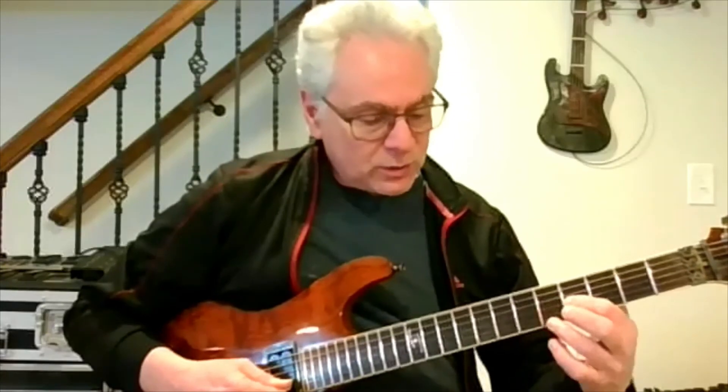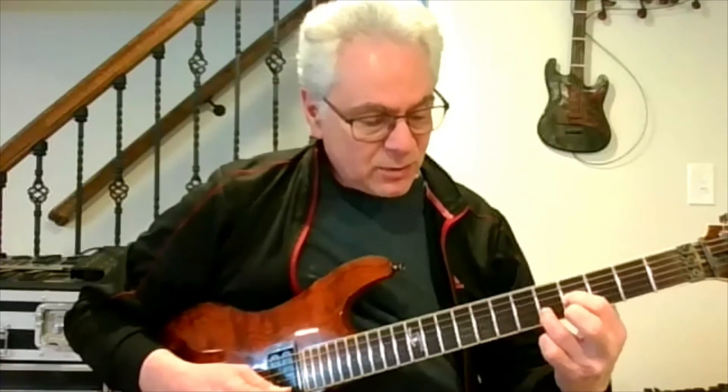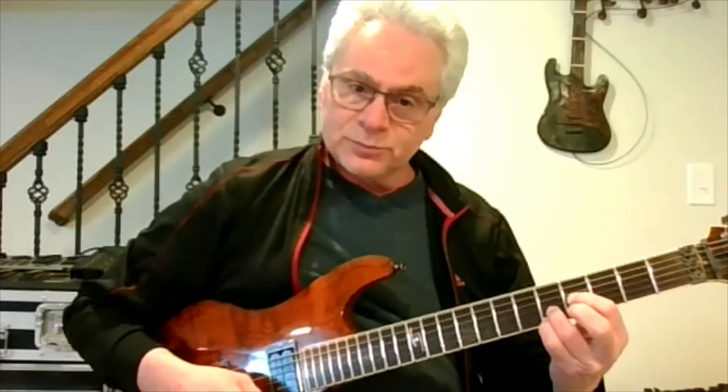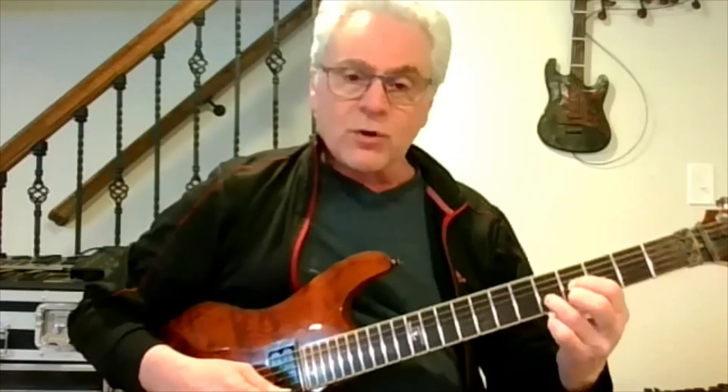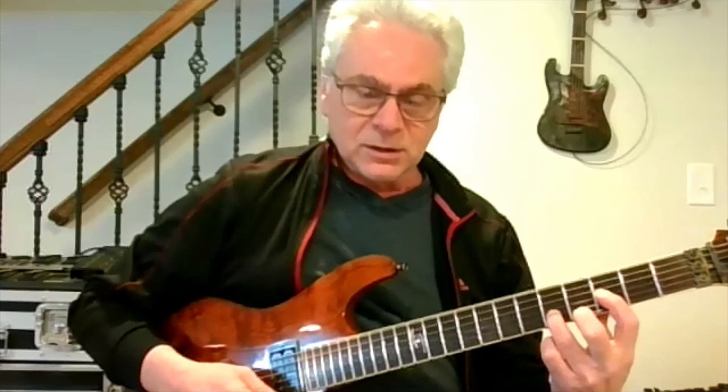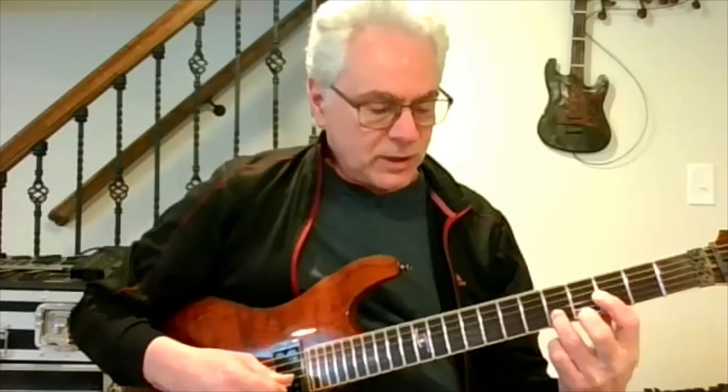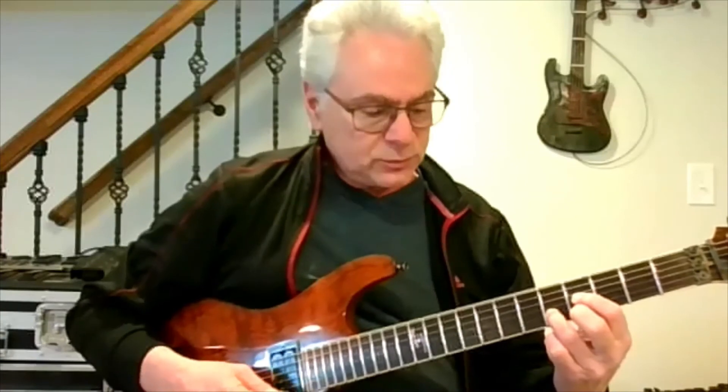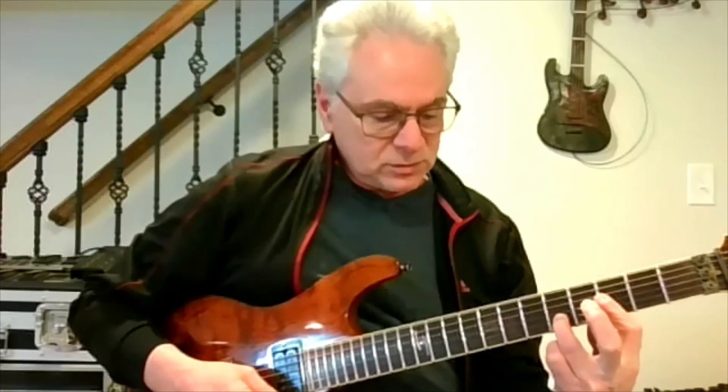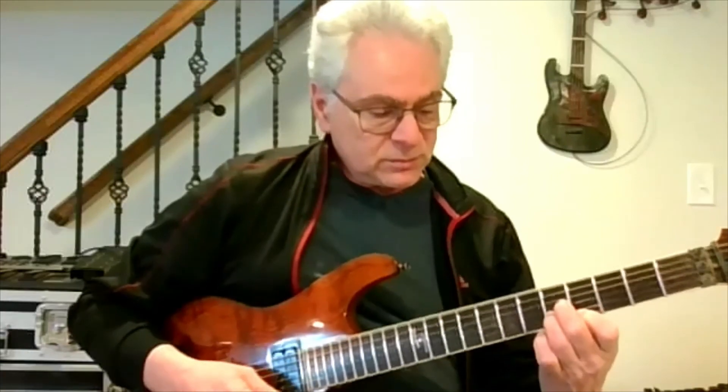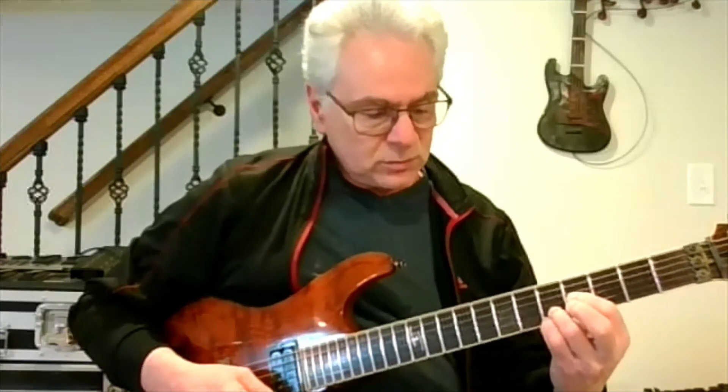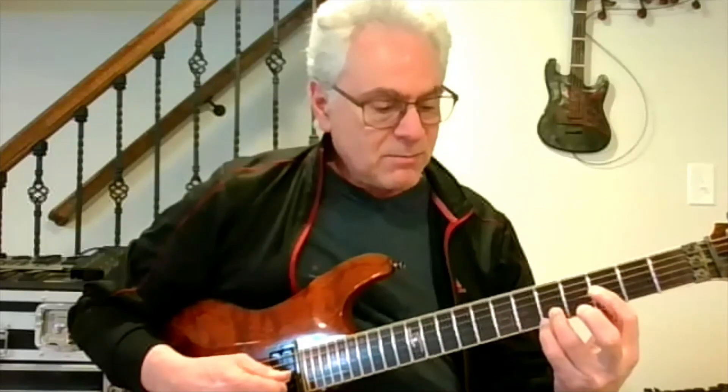So here's my fifth note B, E the root, G sharp. Now if we sus the four, we're going to add the A instead. If we go back to the E major, and if we have an E major flat five, there's our five, we just flat the five. So let me just go through these again quickly. E major, E minor, E diminished, E augmented, E sus2, E sus4, and E major flat five.